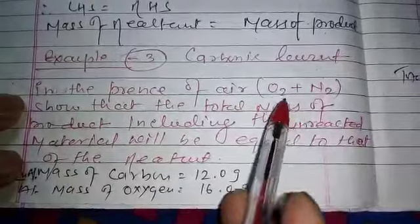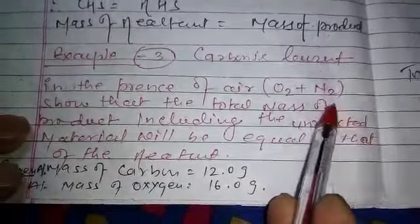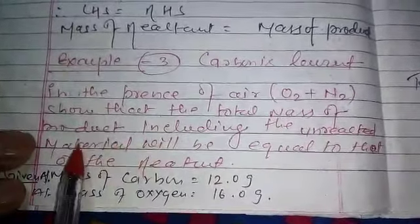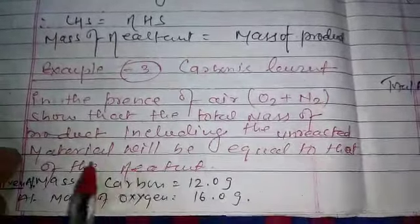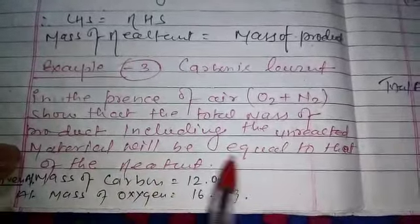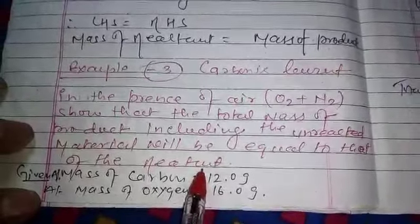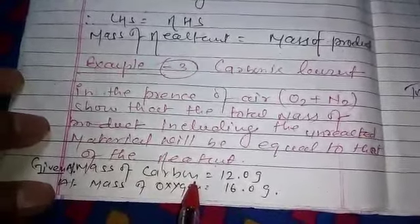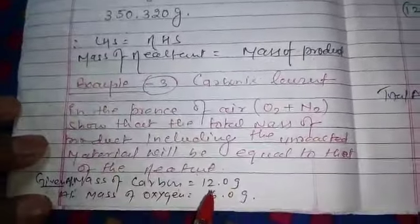In the presence of air, oxygen and nitrogen (O2 + N2), so that the total mass of product including the unreacted material will be equal to that of the reactant. So the given atomic mass of carbon is 12.00 gram and atomic mass of oxygen is 16.00 gram.